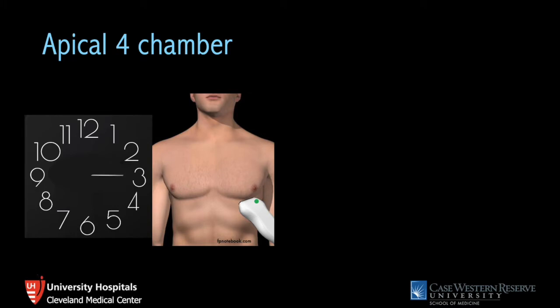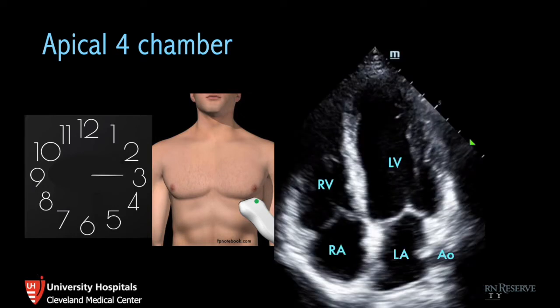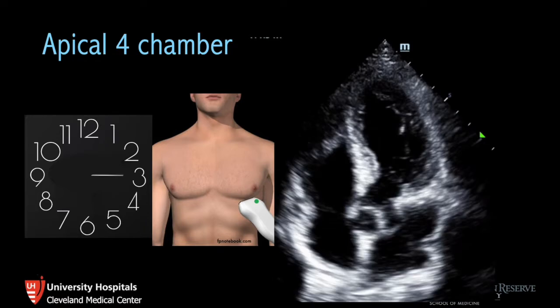For the apical four chamber view, move your probe down to the inframammary fold. Start under the nipple and slide a little laterally depending on the patient's anatomy. You'll see the apex in the near field, the left side of the heart on the right side of the screen, and the right side of the heart on the left side of the screen. Your descending aorta lies just next to the left side of the heart, and that's one way to keep your orientation in check.